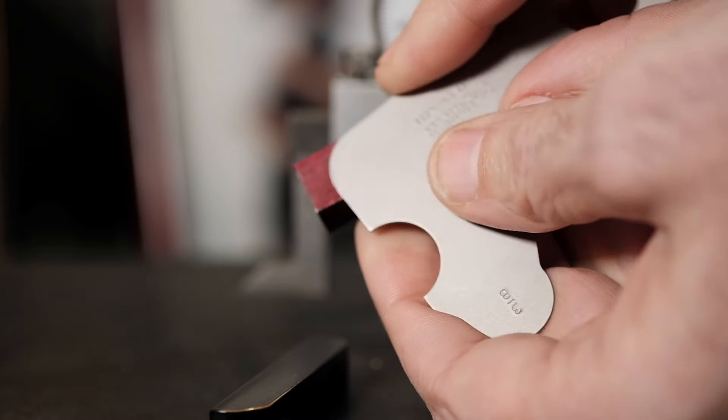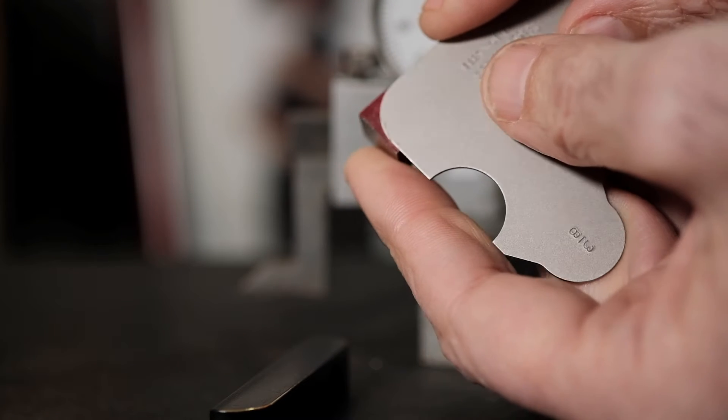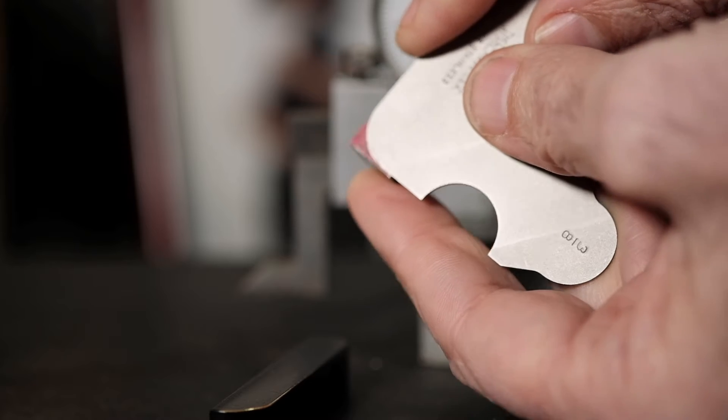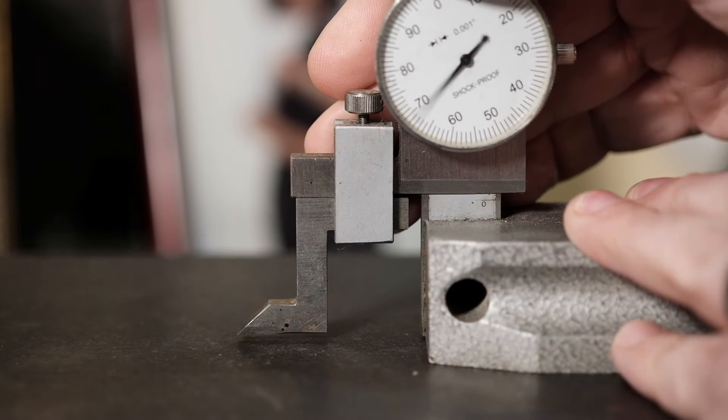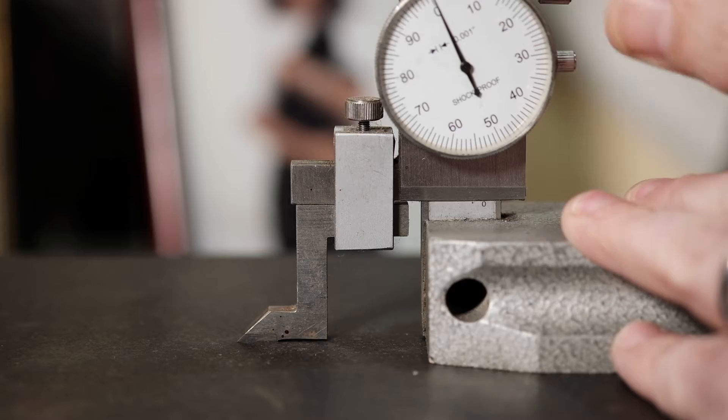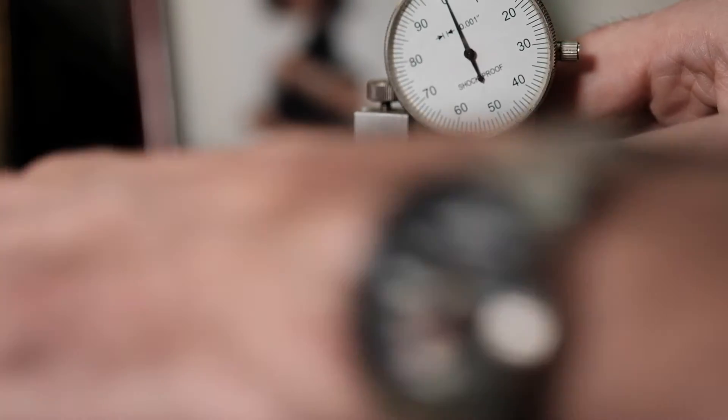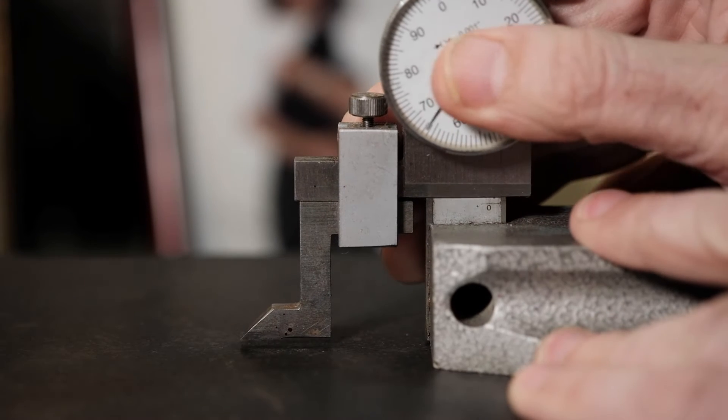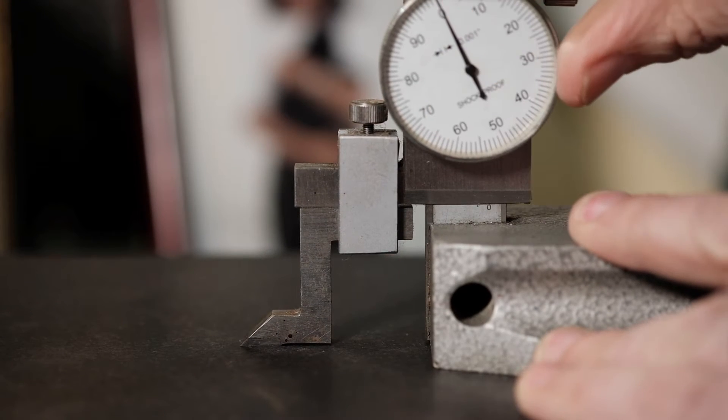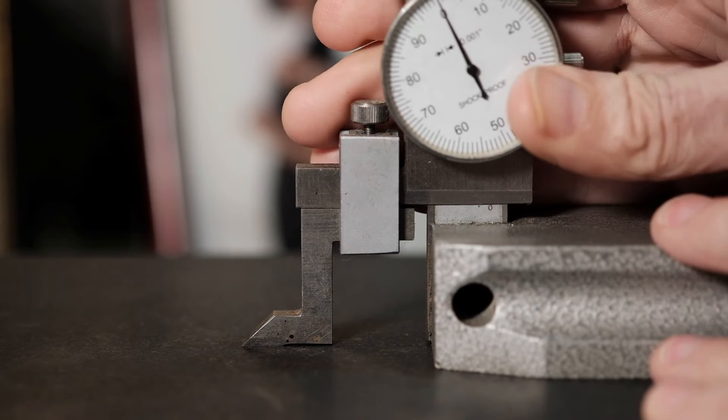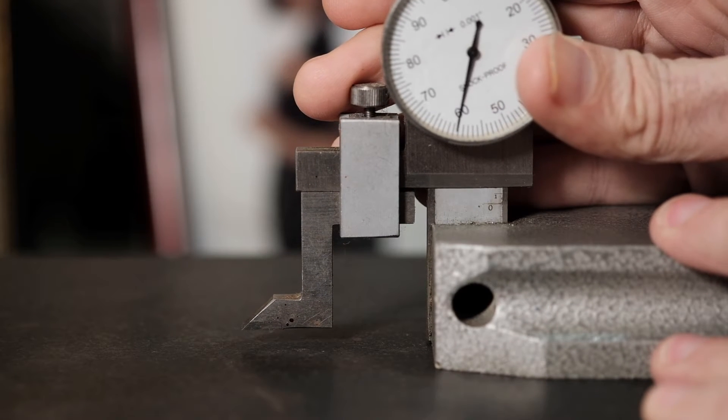Notice you could use the outside radius to scribe the part and then take it over to the belt sander and be done with it. But today, we're not going to do that. So I go over to the surface plate, and I set a height gauge to zero, and we're going to raise this height gauge to the radius we just measured, 375 thousandths.